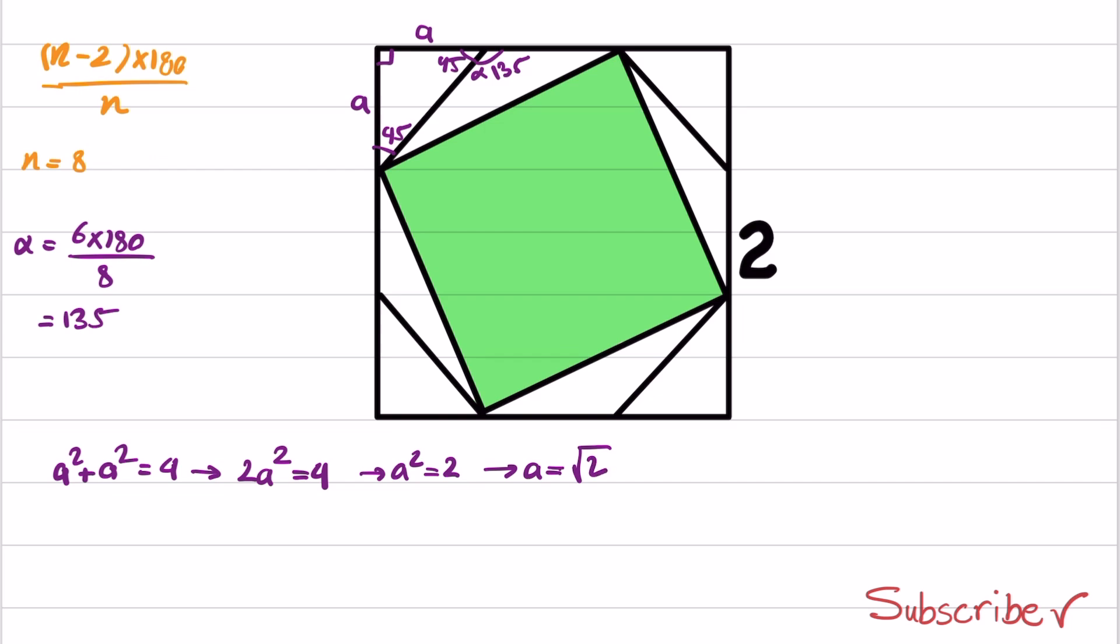Now we know the lengths of this side and this side. What we need to obtain is the lengths of this square. If the length of this colored square is x, the area of the square that we are trying to find is x squared. So if I find the value of x squared, we solve this question.